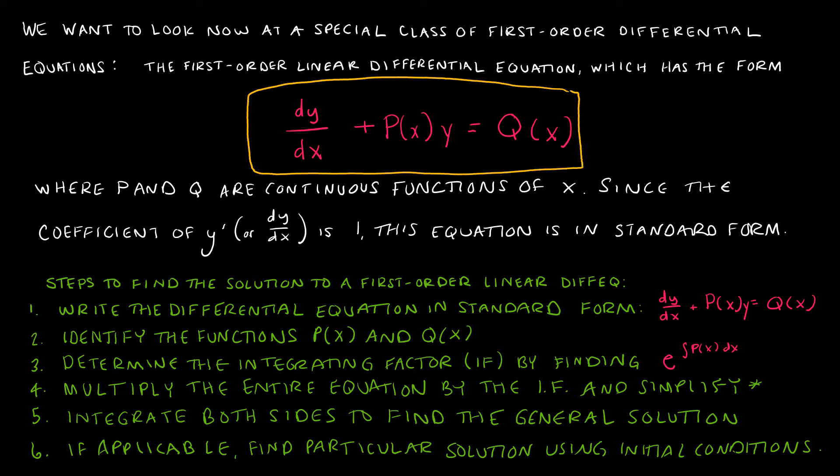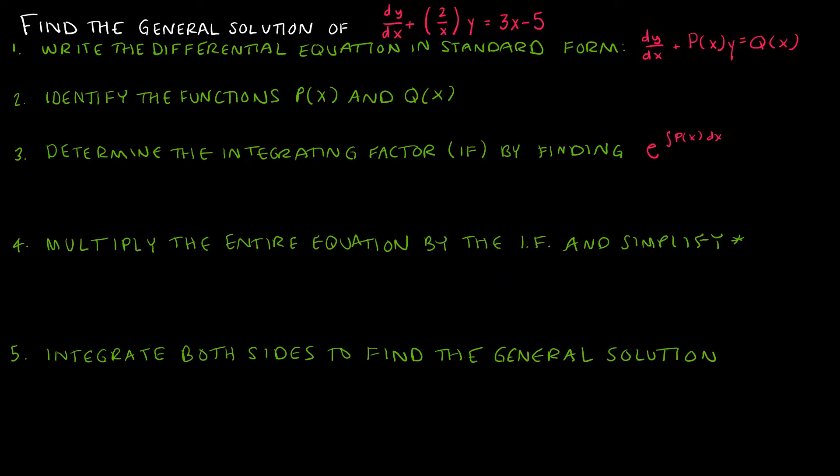There are several steps involved. I'm not going to read over those steps because it makes a lot more sense when we actually do them, so I've put them here for your reference. We're going to move on to our first example. It's a general solution question. I've only written five of the six steps here because the sixth step is for finding a particular solution, which we'll look at in our next example. In this example, we're just going to focus on finding the general solution.